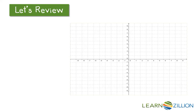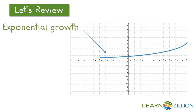One more thing to review and that is graphs. When we graph exponential functions we're going to see two different types. With exponential growth, the curve starts increasing slowly, but as the inputs continue to get larger and larger, the amount by which the output grows increases — so this curve gets steeper and steeper.